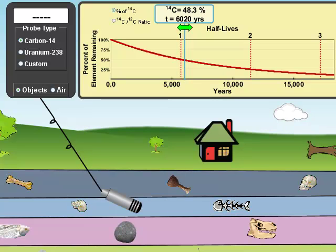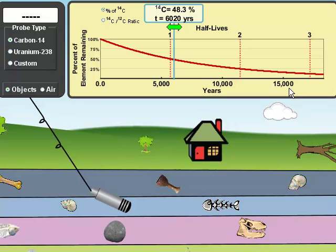Half lives are often given in proportions. If we look at this excellent PHET simulation, you can see that the quantity of carbon-14 that remains is actually given as a percentage of the initial amount.